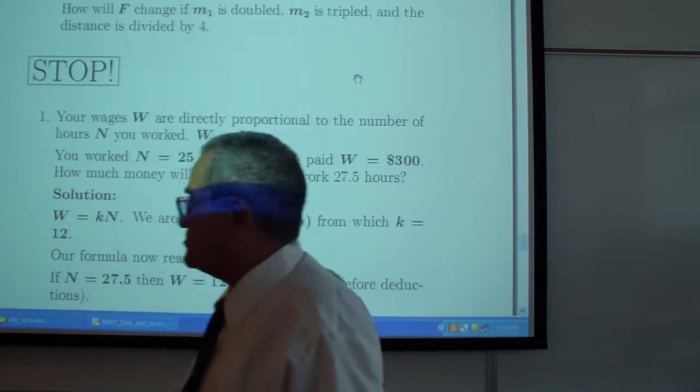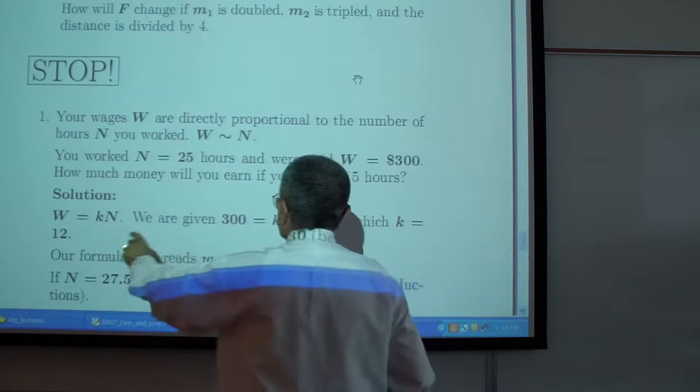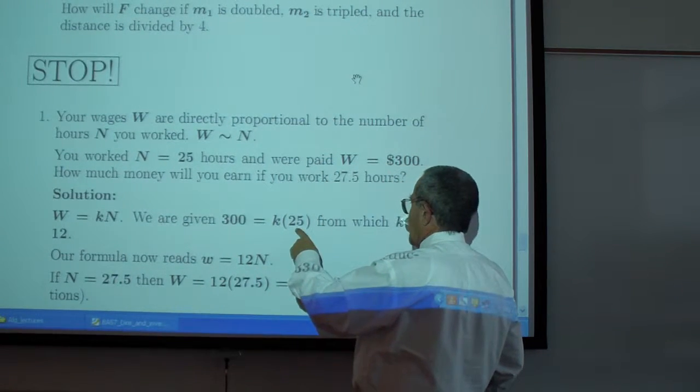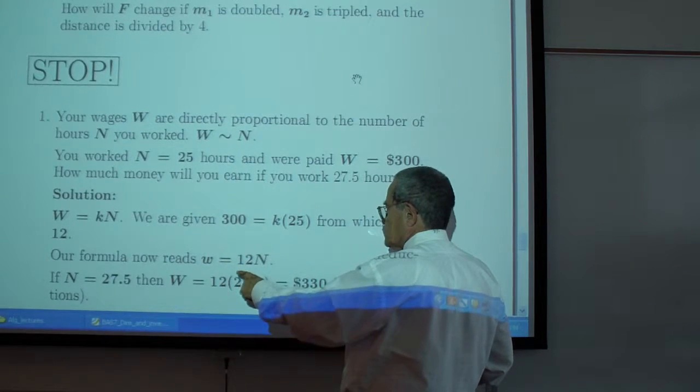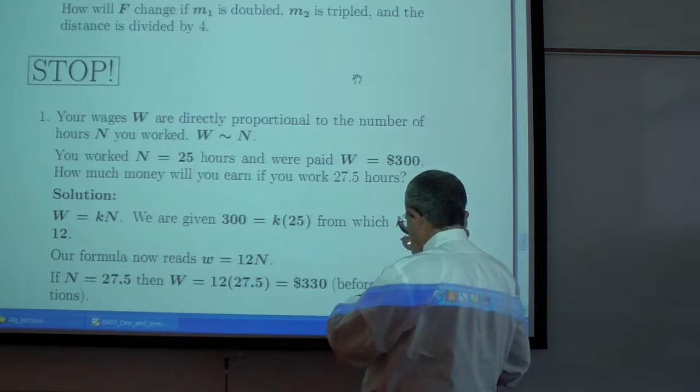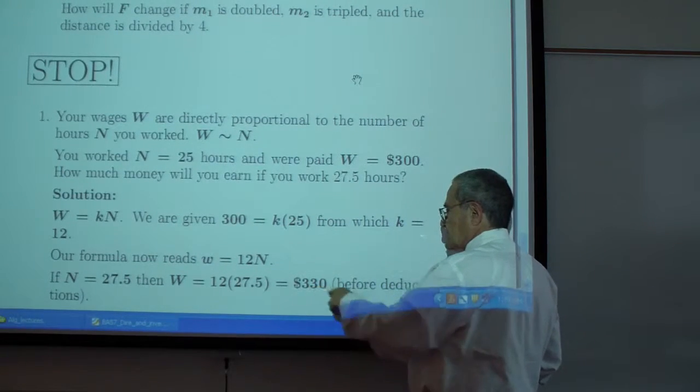Solution to exercise one. W is K times N. W is 300 when you have 25 hours. That leads you to K which is 12. W is 12 N. If N is 27 and a half, you get about $330.